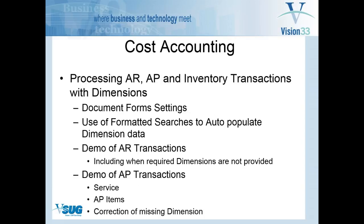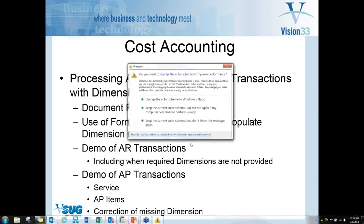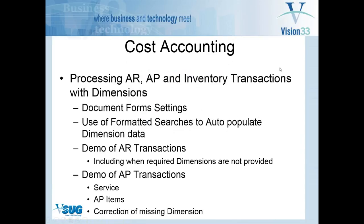Then I will go through some cost accounting processing using AR, AP, and inventory transactions with dimensions. I'll show you the form settings that are used, and also the advantage of some formatted searches to auto-populate the data to help with time entry and getting the information right. I'll go through the AR transactions and show you how to correct a transaction if the dimensions are not provided in the original invoice. Then I'll follow up with some AP transactions — we'll look at service and an AP item. An AP expense item is an item in the item master, non-inventory, that's keyed directly to a specific expense account.